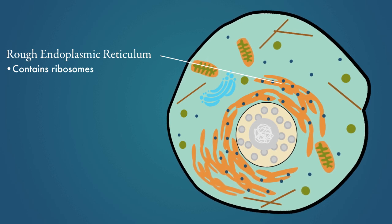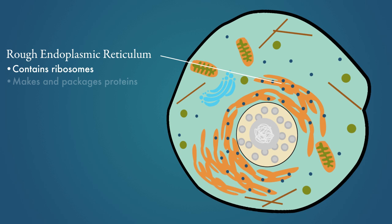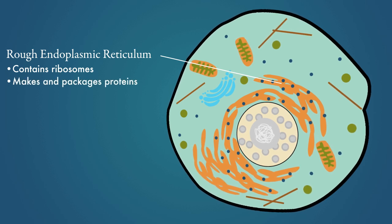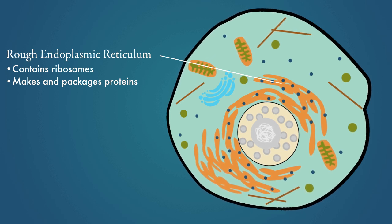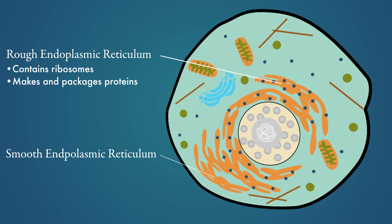Rough endoplasmic reticulum is mostly responsible for the final stages of assembling polypeptide chains into proteins and packaging them so that they can be transported throughout the cell or used outside the cell.